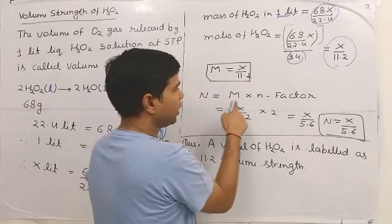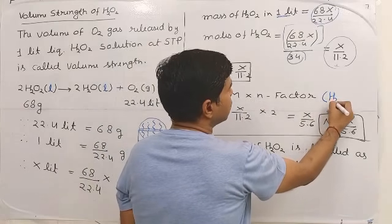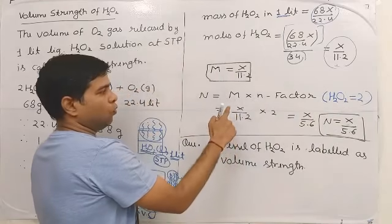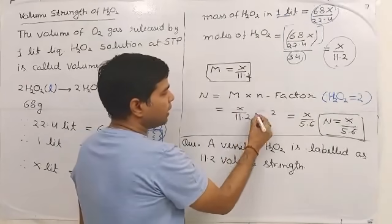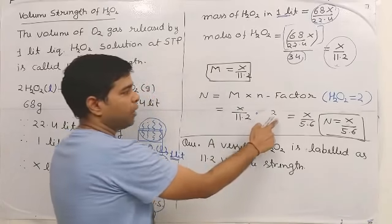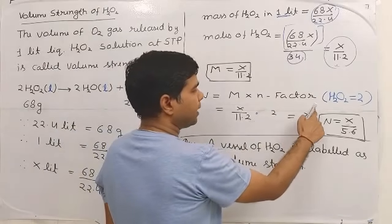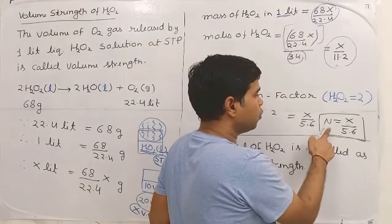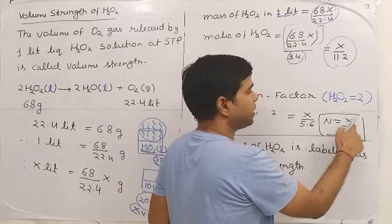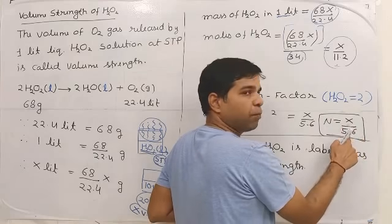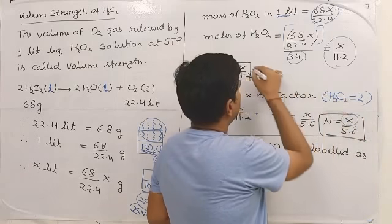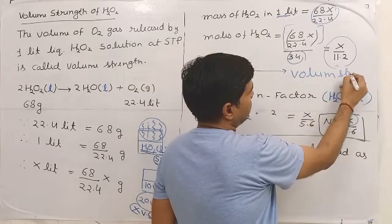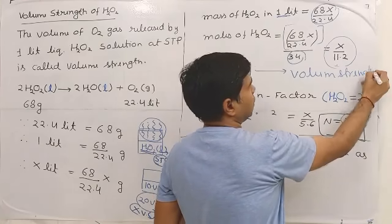To calculate normality: Normality = Molarity × n-factor. The n-factor for H2O2 is 2. So Normality = (x / 11.2) × 2 = x / 5.6. Therefore, the direct formula for normality of H2O2 is: Normality = x / 5.6, where x is the volume strength of H2O2.